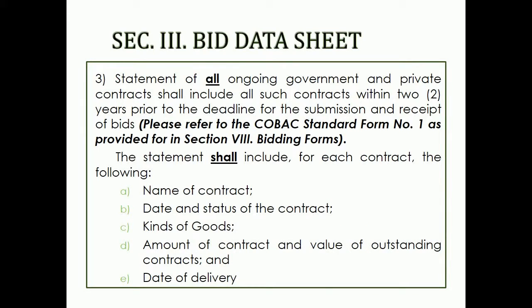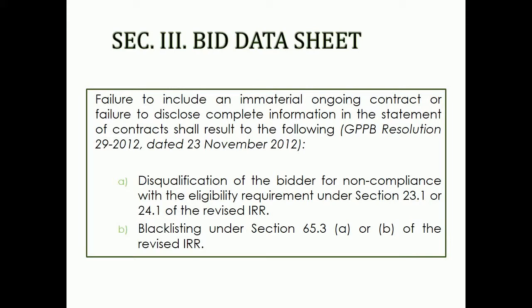3. Statement of all ongoing government and private contracts, which shall include all such contracts within two years prior to the deadline for the submission and receipt of bids. The statement shall include: name of contract, date and status of the contract, kinds of goods, amount of contract and value of outstanding contracts, and date of delivery. Failure to include an immaterial ongoing contract or failure to disclose complete information in the statement of contracts shall result to disqualification of the bidder for noncompliance with the eligibility requirement under Section 23.1 or 24.1 of the revised IRR, and/or a blacklisting under Section 65.3(a) or (b) of the revised IRR.